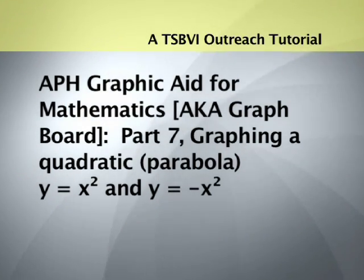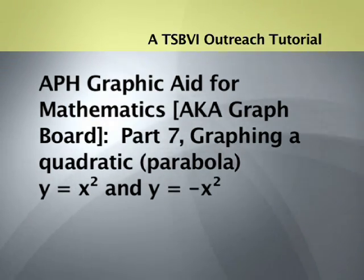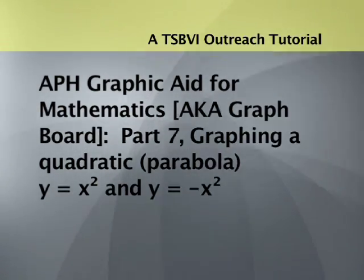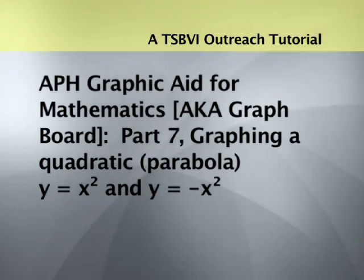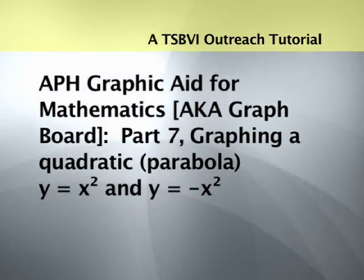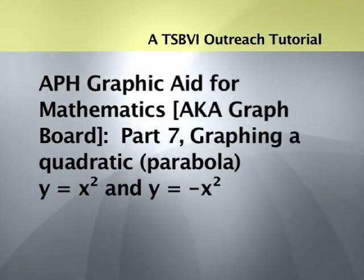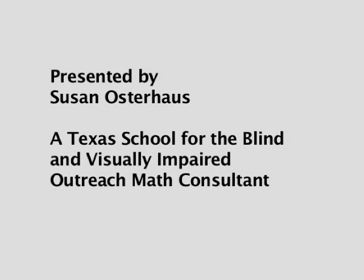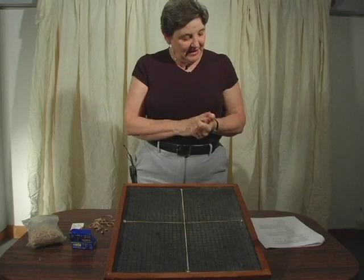A TSBVI Outreach Tutorial. APH Graphic Aid for Mathematics, also known as Graph Board. Part 7: Graphing the Quadratic Parabola — Y equals X squared and Y equals negative X squared. Presented by Susan Osterhaus, a Texas School for the Blind and Visually Impaired Outreach Math Consultant.